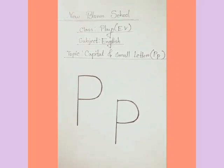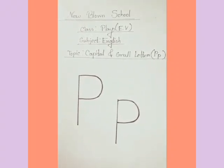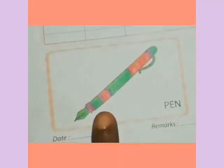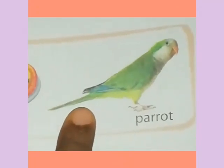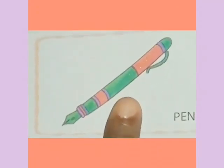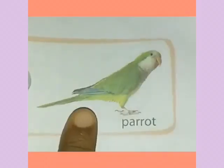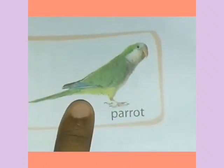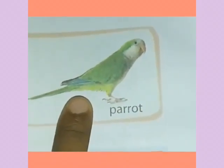Now I am going to teach you two new words by using P. P is for pen. P is for parrot. This is a pen — we all use it for writing. This is a parrot. It is a bird and its color is light green.